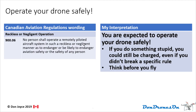The very first regulation is actually before any of the 901 series — it's 900.06, called reckless or negligent operation. Bottom line: you're expected to operate your drone safely. If you do something stupid, you could still be charged even if you didn't break a specific rule. The exact wording states: no person shall operate a remotely piloted aircraft system in such a reckless or negligent manner as to endanger or be likely to endanger aviation safety or the safety of any person.